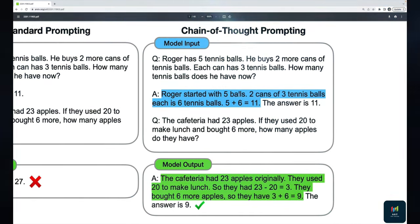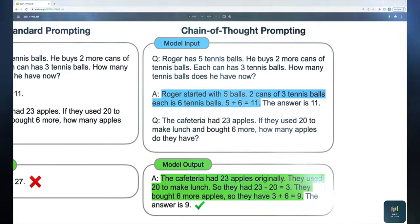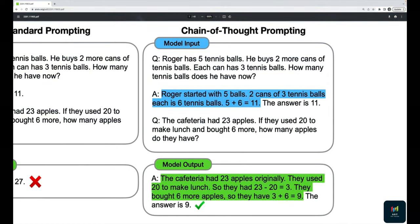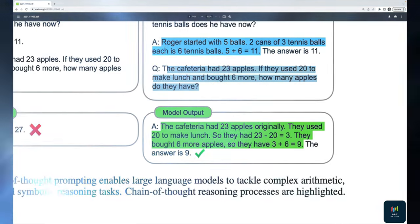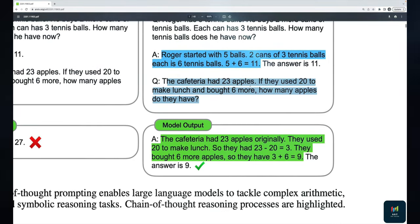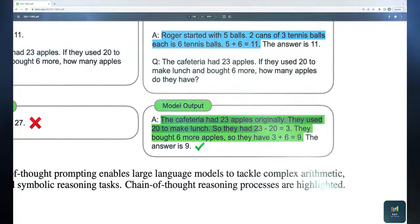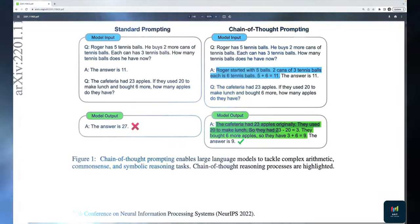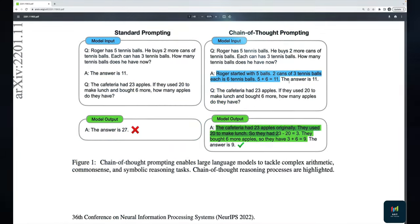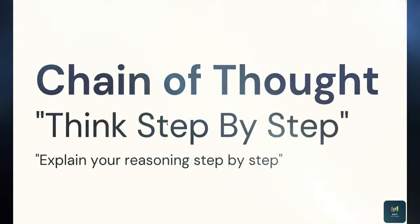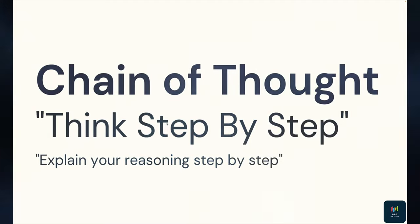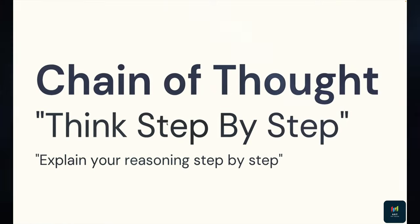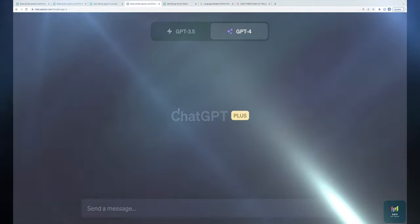The explanation walks through the reasoning: 'Roger started with five, two cans of three tennis balls means you have six, five plus six equals eleven.' Then the model continues this chain of thought process. Instead of doing all of this manually, we can simply use phrases like 'think step by step,' 'explain your reasoning step by step,' or 'provide a chain of your thoughts' — and that sort of prompting can make a significant difference.